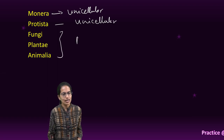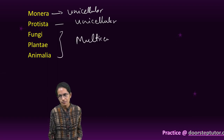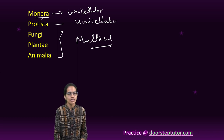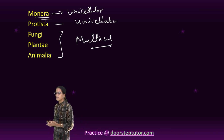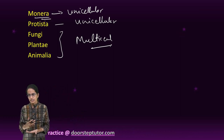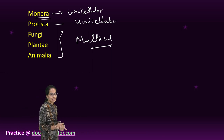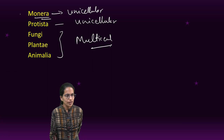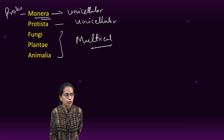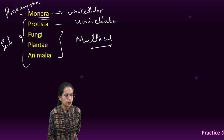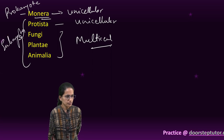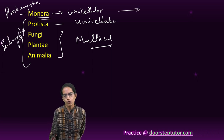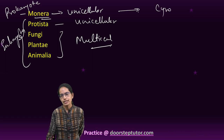The remaining three kingdoms — Fungi, Plantae, and Animalia — are multicellular. In Monera, the nucleus is not well defined, which is why it is called prokaryote. The remaining kingdoms are called eukaryotes.